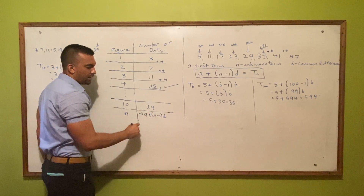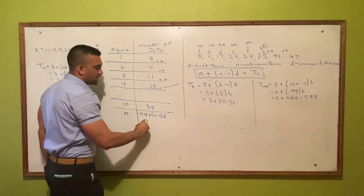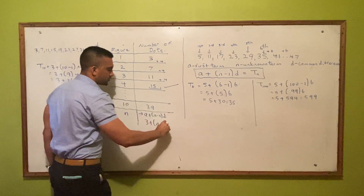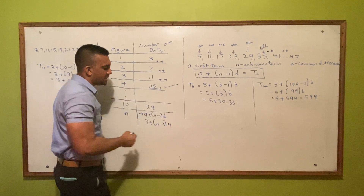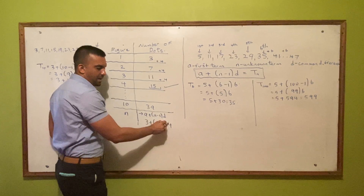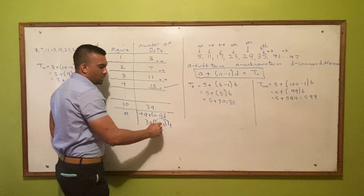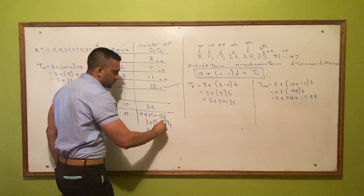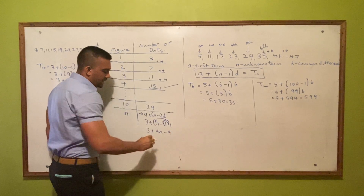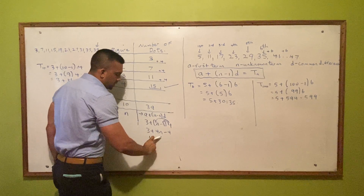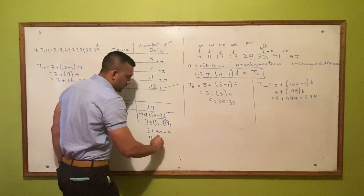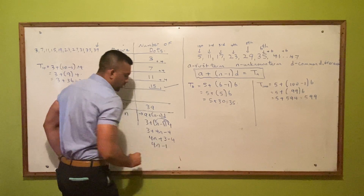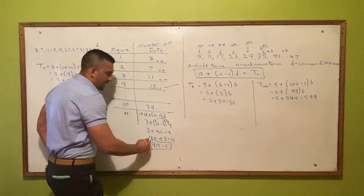Because it's the nth term, you want the expression in terms of n. So a, the first term, is 3. Plus (n - 1), and d, the common difference, is 4. Expand the brackets — multiply everything inside by the number in front. 4 times n is 4n, 4 times minus 1 is minus 4. So we get 3 + 4n - 4. Simplifying: 4n, and 3 minus 4 is minus 1. The expression is 4n - 1.